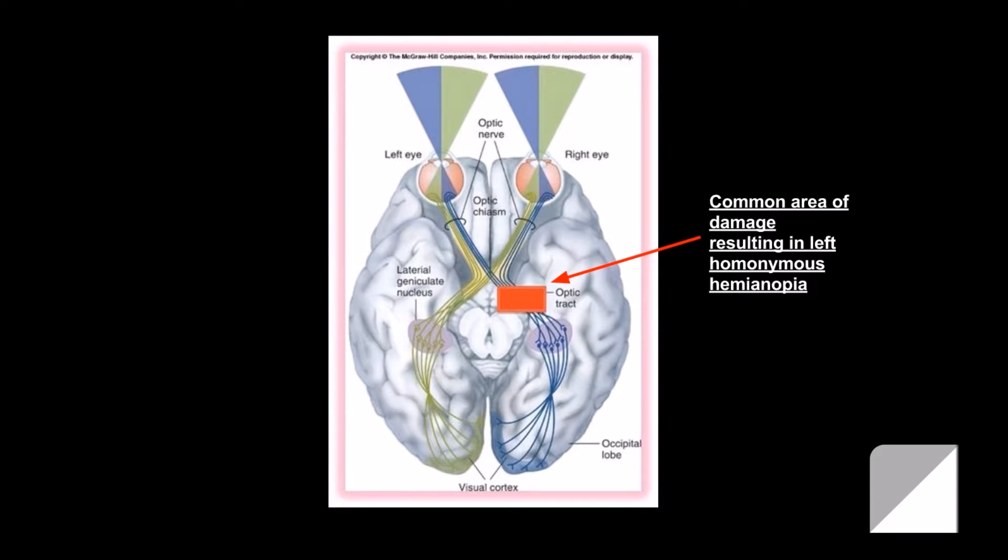Homonymous hemianopia is a type of visual deficit in which a person loses the same half of their visual field in both eyes. The deficit resulting from damage to the visual pathway posterior to the optic chiasm is most often caused by stroke.